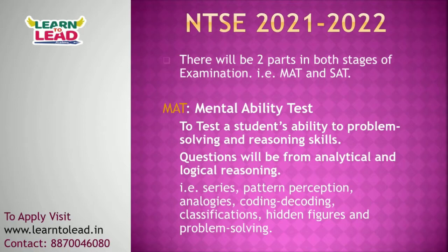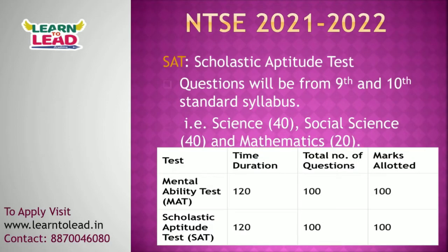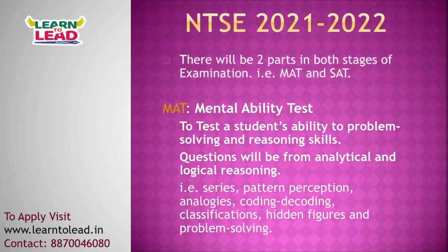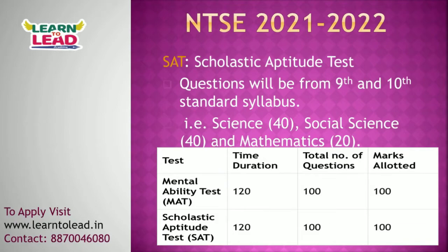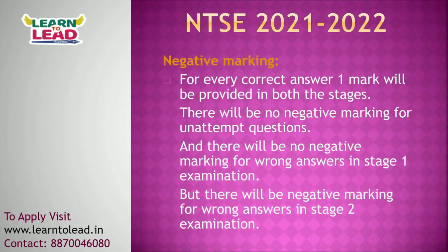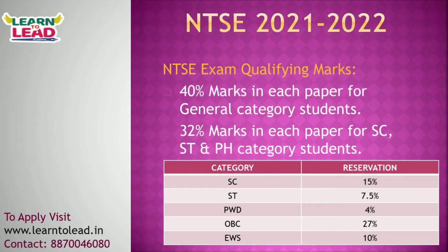The exam is NCERT-based. There is one paper with two parts: the Mental Ability Test (MAT), covering reasoning and verbal knowledge, and the Scholastic Aptitude Test (SAT), covering Science (40 questions), Social Science (40 questions), and Mathematics (20 questions) — totaling 100 questions each. Every correct answer carries 1 mark in both stages. Stage 1 has no negative marking, while Stage 2 has negative marking.